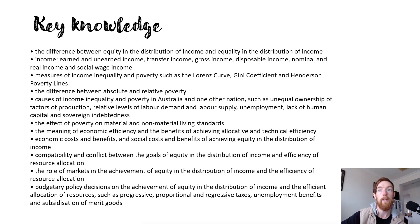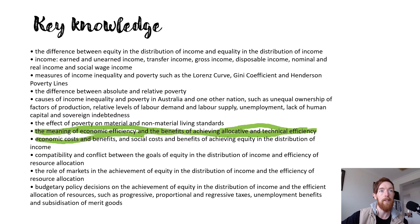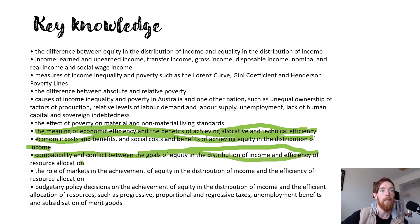So when we look at our key knowledge over here, what we're going to be looking at is the meaning of economic efficiency and its benefits to achieving allocative and technical efficiency, and some of the costs and benefits of achieving equity in income distribution and the compatibility and conflict. They all kind of blend together — it's pretty simple and clear. And then next lesson, we're going to start to look at some of the role of markets and budgetary policy decisions.